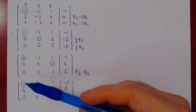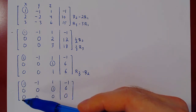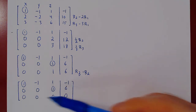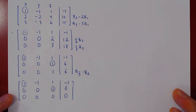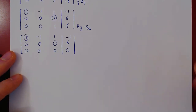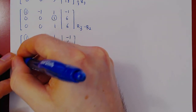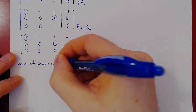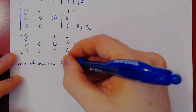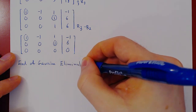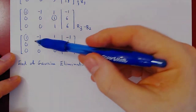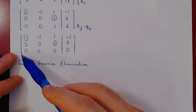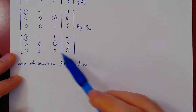We had our leading one in the top row, killed the entries below, then a second leading one, killed the entries below, and there are no other possible leading ones — this is the end of Gaussian elimination. We've obtained every possible leading one and killed all the entries below them. Any rows of zeros — and there is one here — are all at the bottom.